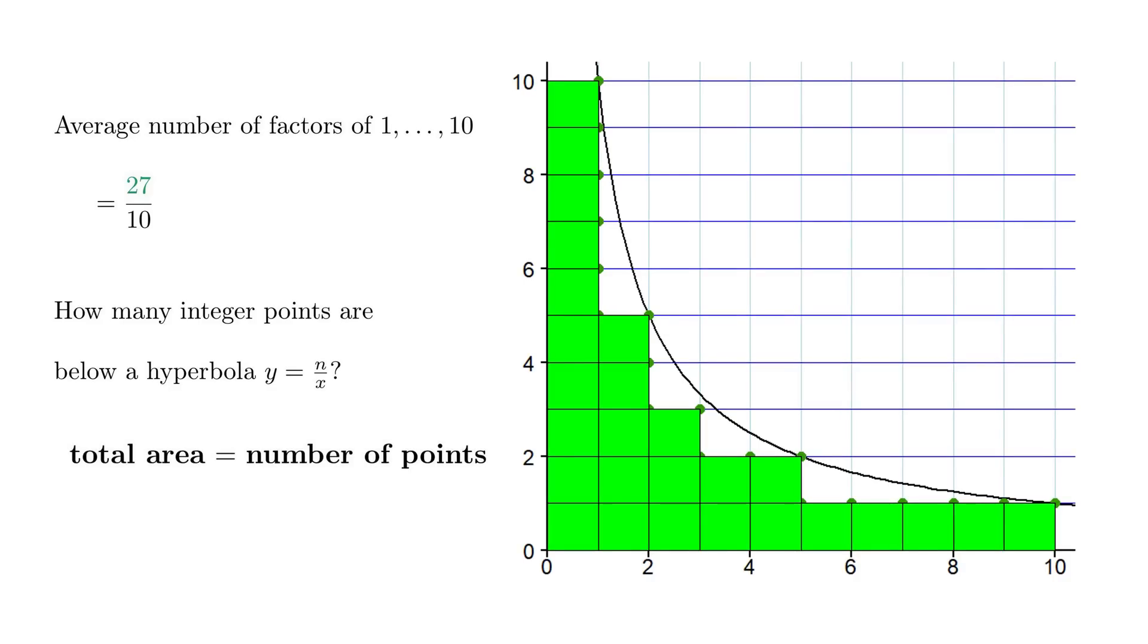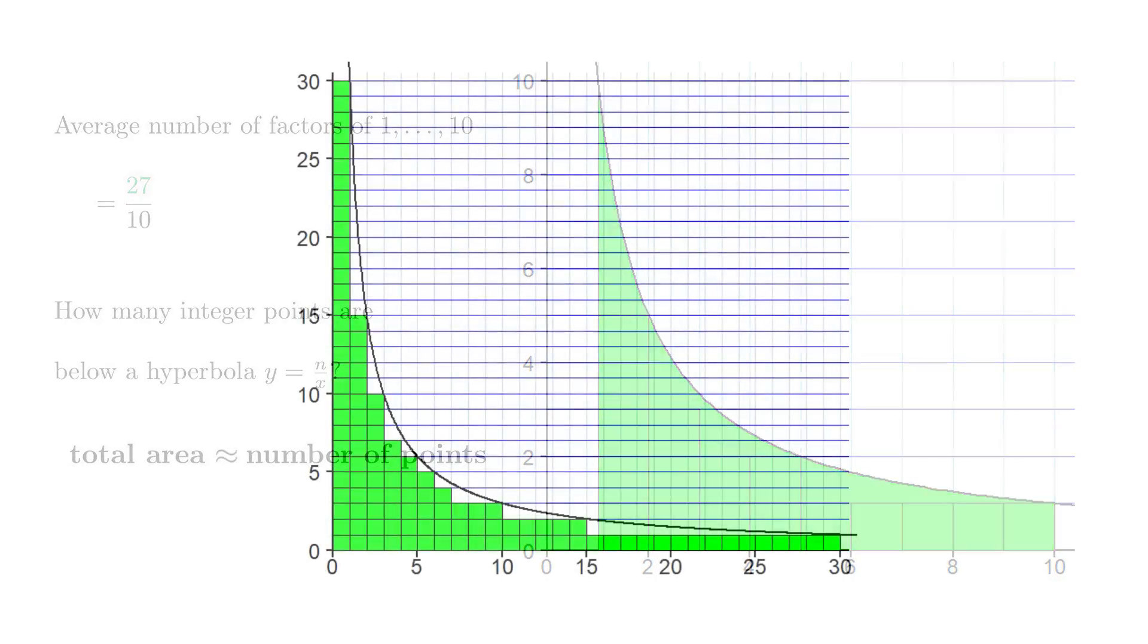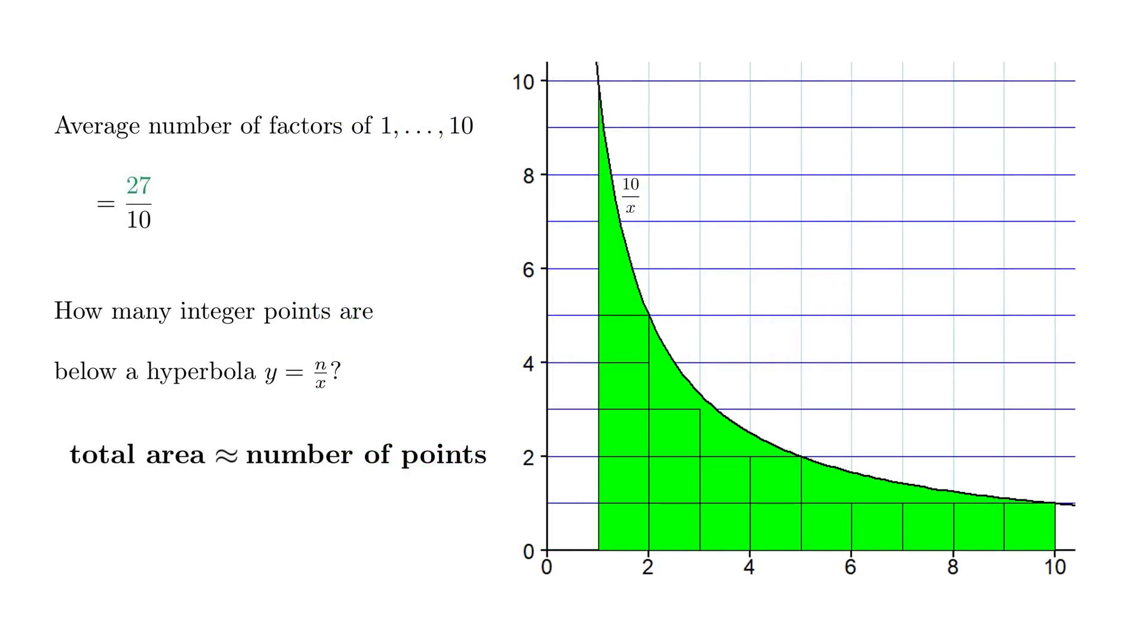Unfortunately, this area still isn't easy to compute. So, let's make two simplifications. First, we get rid of the first column and second, we add this extra strip on top. Immediately, we thereby change the total area. However, doing the same for, say the first 30 numbers, we see that the error created has only a small effect. In other words, in the long run, this simplification does not change the result, as the percent error tends to zero.